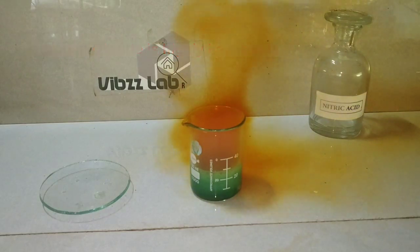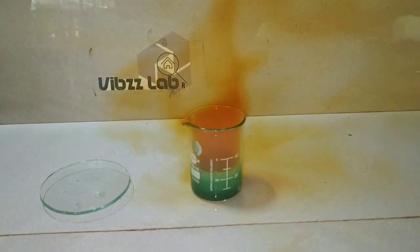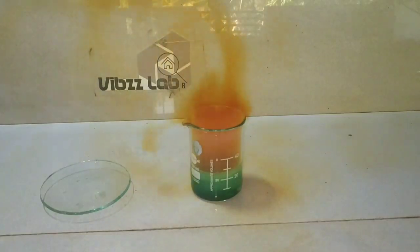Observe how vigorous the reaction is taking place. This is very similar to how a piece of copper metal would have reacted with the nitric acid. There are dense brown fumes of nitrogen dioxide and the solution has turned bluish green in color.